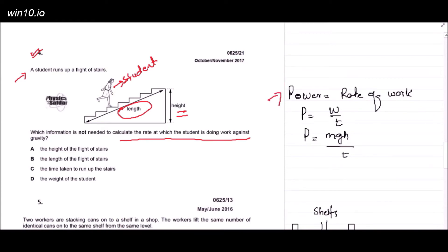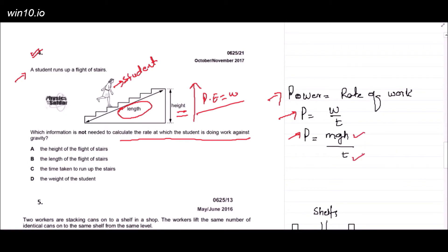The rate at which the student does work against gravity means power. Power equals work done over time. Since the student is doing work against gravity, we're talking about vertical movement. When an object moves against gravity, it gains gravitational potential energy. So work done equals gravitational potential energy = mgh. Therefore, to calculate the rate of doing work, we need: mass (or weight), gravitational field strength, vertical height, and time taken.